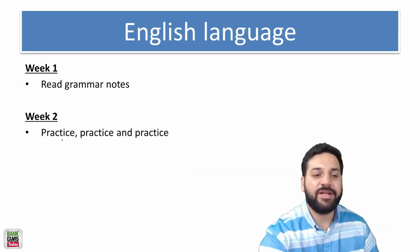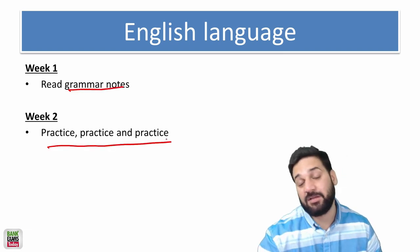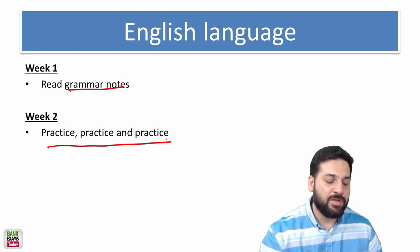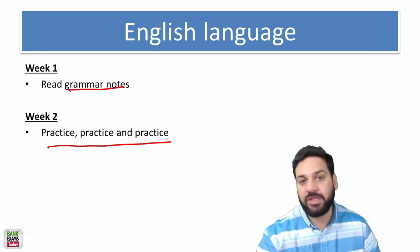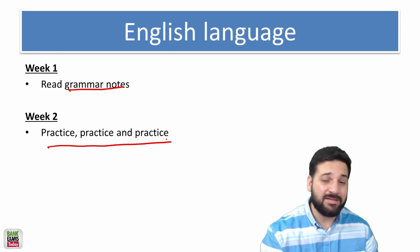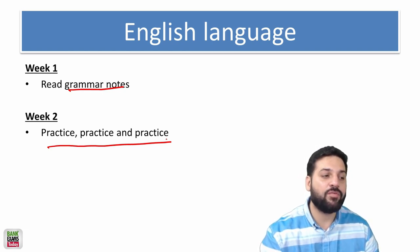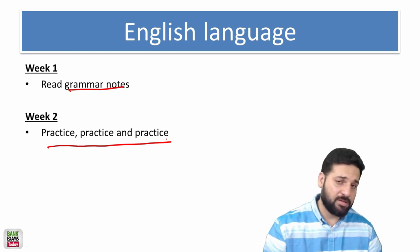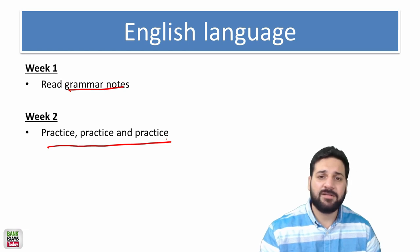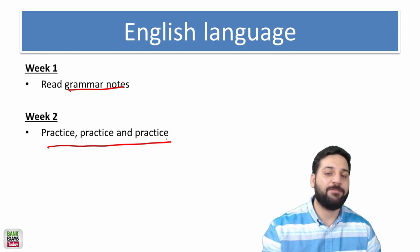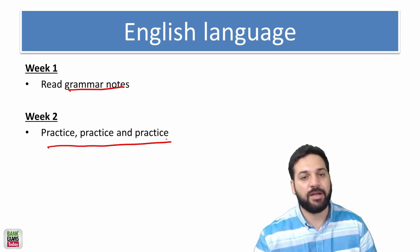In the English language, just read the grammar notes and do the practice. That's it. English language is a kind of section which you cannot improve within a week or two. It takes time, it takes years. It is a language. You cannot improve your English score within a preparation of like two or three weeks, six months. But it depends. There are many students who do not even prepare for English language but they end up getting 25 plus scores. It is quite common.